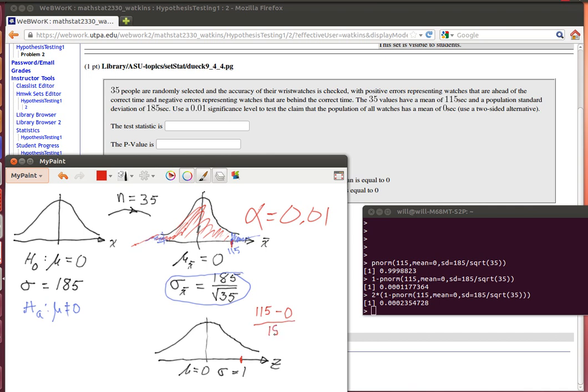We want to find out how many standard deviations away we are. That's what the standard normal distribution is looking at, so that calculation is the test statistic. We can do that easily in R or in WebWork. It's just going to be 115 divided by 185 over the square root of 35.